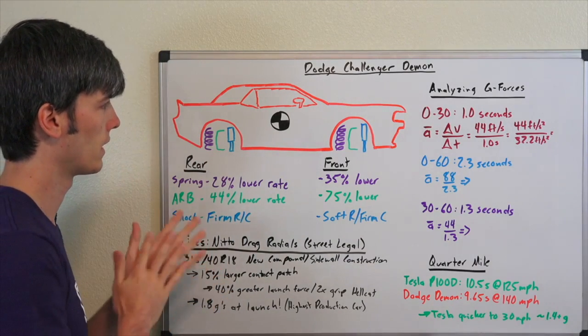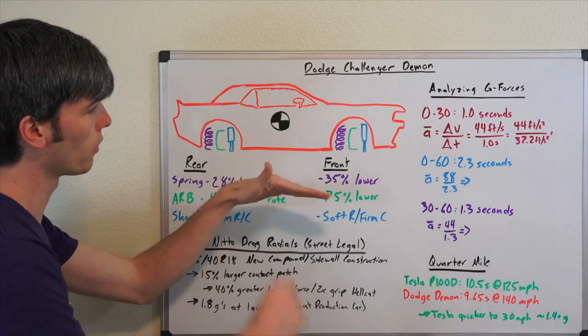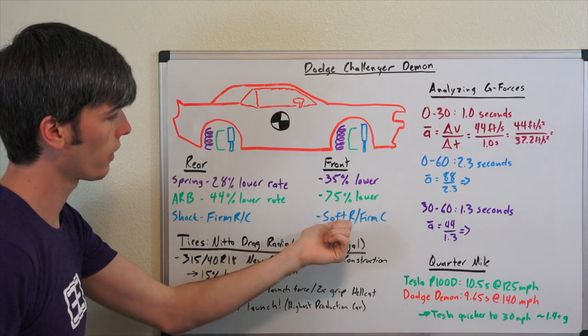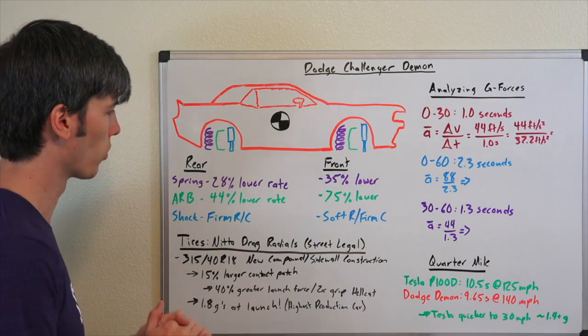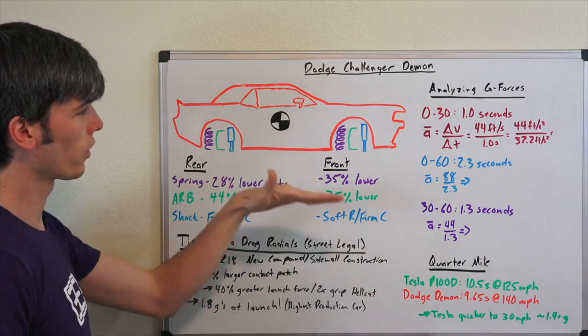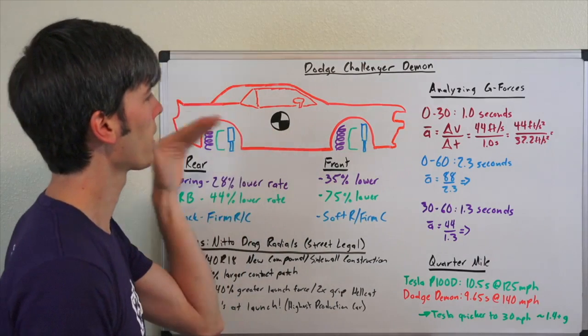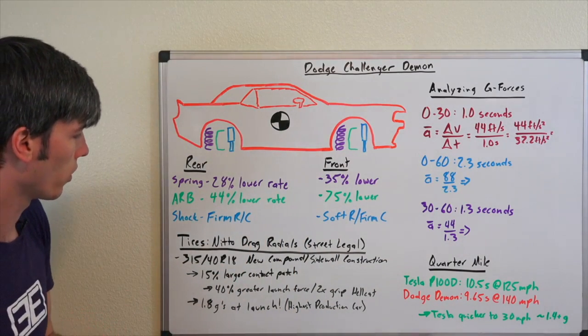Versus the Hellcat. Now once you come back down and you let off full throttle, they're actually going to stiffen up that front rebound so that the car is more stable. But while you're at full throttle, they're going to leave it soft so that you can have that vehicle tilt back, lean back, and get all of that weight as much as possible onto those rear wheels.